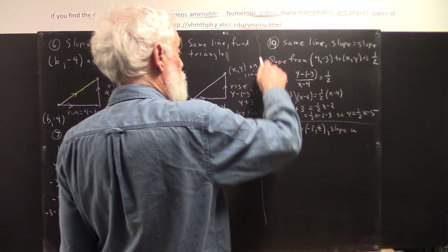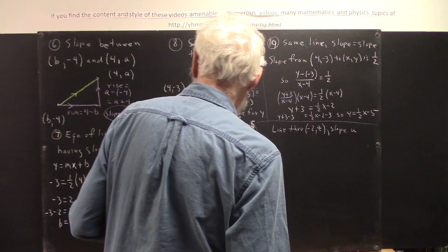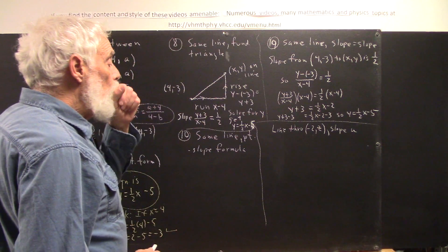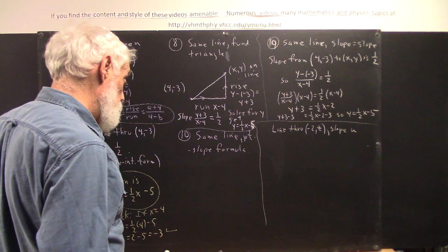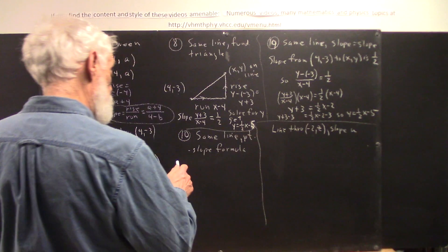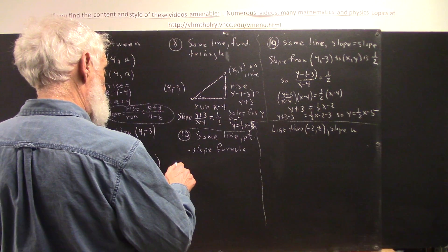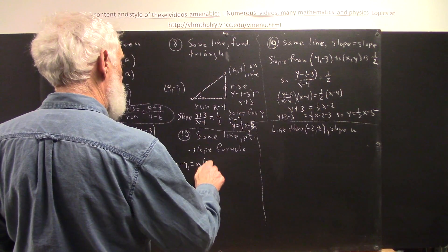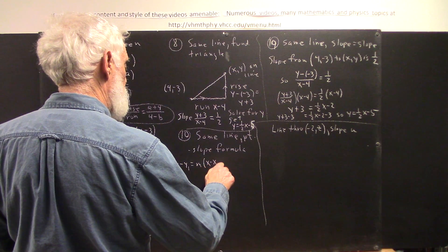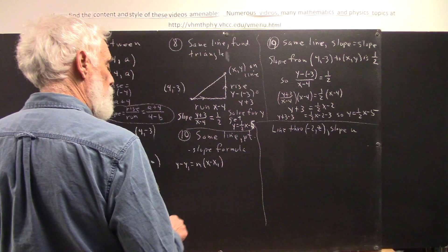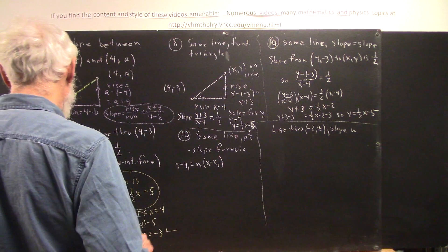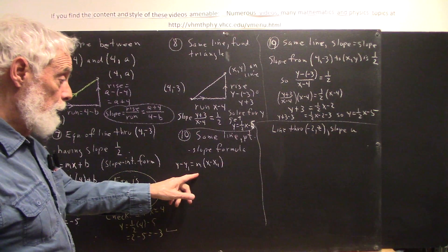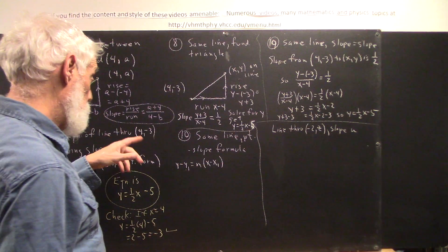Again, 8 and 9 are very similar. 10, we want to do the same line using the point slope formula. Well, the point slope formula says that y minus y1 equals m times x minus x1. Where x1 and y1 are the coordinates of the known point, and m is the slope.